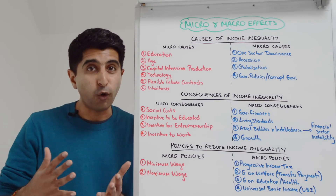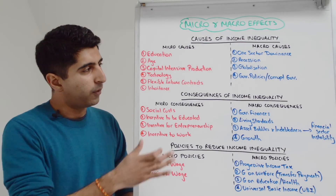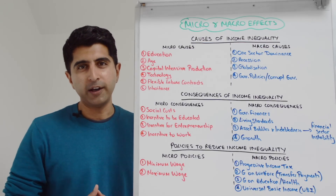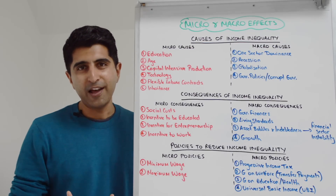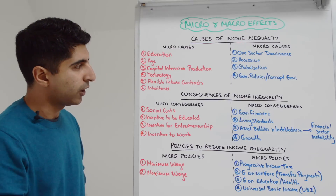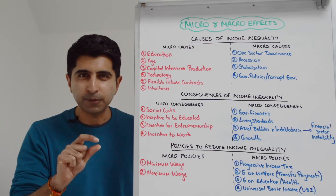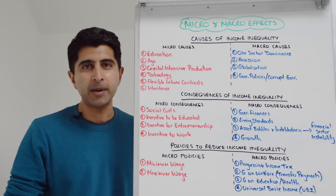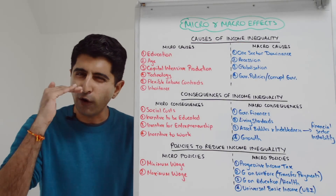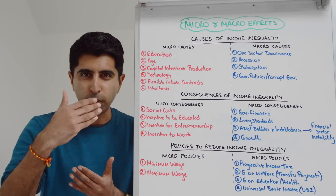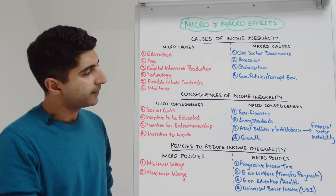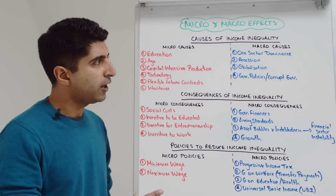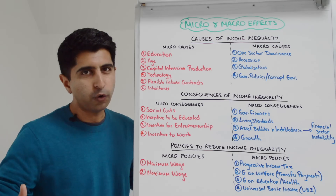Technology is a major driver of inequality in two ways. Technology advancement can highly complement the skills of high-income earners and make their incomes even greater, whereas technology advancement can replace the jobs of lower-income workers through automation, significantly increasing inequality. Those on flexible labor contracts — part-time, gig economy, zero-hours contracts — often earn significantly lower incomes than those on more consistent full-time contracts. Inheritance is another micro driver of inequality.